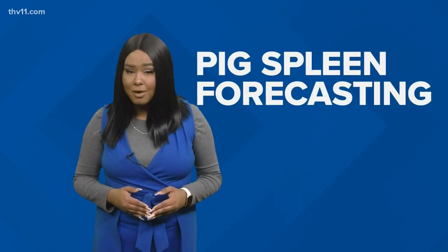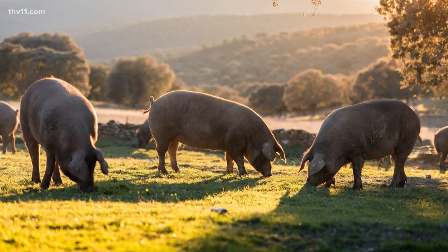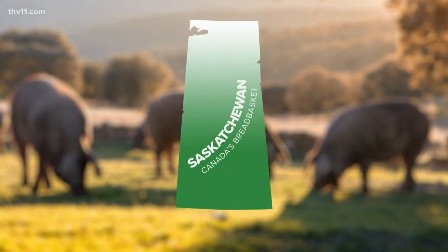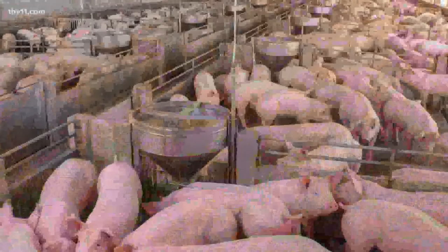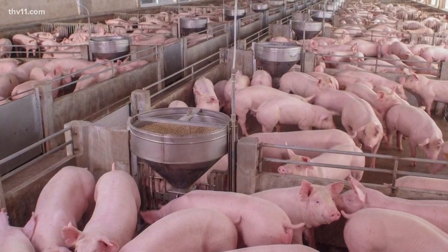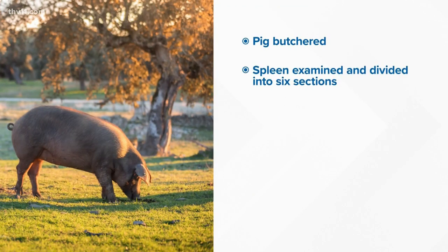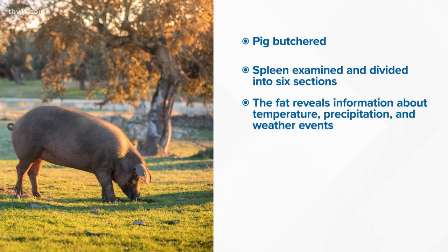One of the oddest animal-related methods used for weather prediction has to be pig spleen forecasting. It's a method mostly known in a small community in Saskatchewan, Canada. Gus Wickstrom learned this method from his father, and it has been passed around the family. Every six months, a pig will be butchered and the spleen will be examined and divided into six sections, representing the following six months. They look at the fat to determine things like temperature and precipitation, even specific dates and weather events.